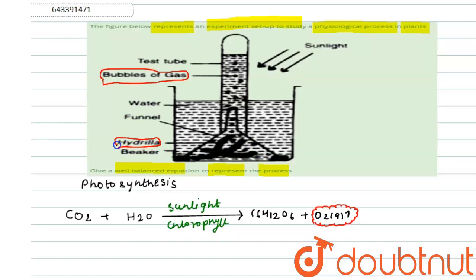So how to write the balanced equation? It is 6CO2 plus 6H2O gives C6H12O6 plus 6 molecules of oxygen. This is our balanced equation of photosynthesis.